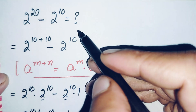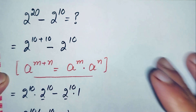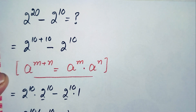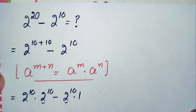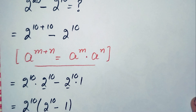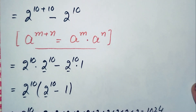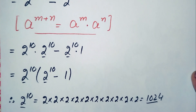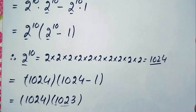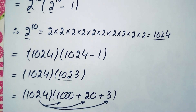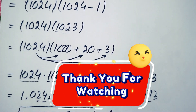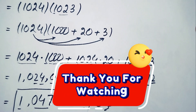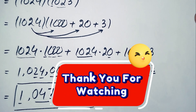So 1,047,552 is our final answer and the value of this beautiful math simplification problem. If you like this video, don't forget to subscribe to my YouTube channel for more interesting step-by-step math videos. Thanks for watching!